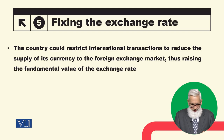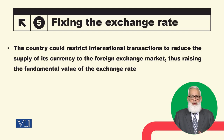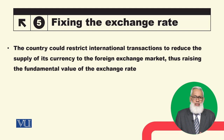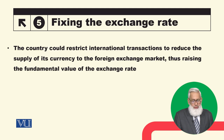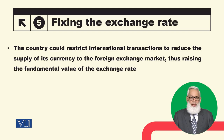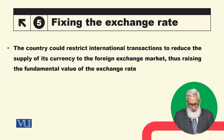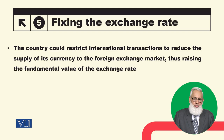The country could restrict international transactions to reduce the supply of its currency to the foreign exchange market. By restricting international transactions, the country raises the fundamental value of the exchange rate. When the currency is overvalued, supply is more than demand. To reduce supply, the country restricts international transactions, discourages them, and imposes restrictions.